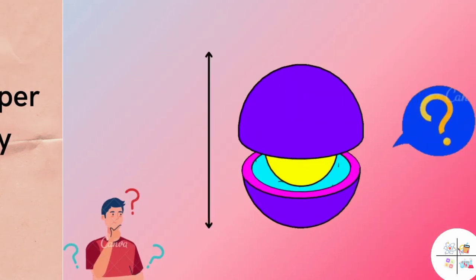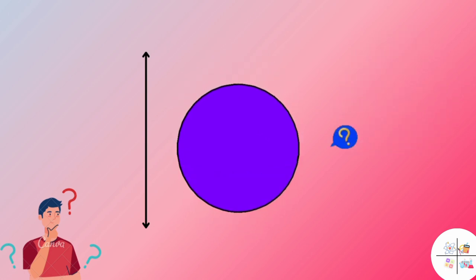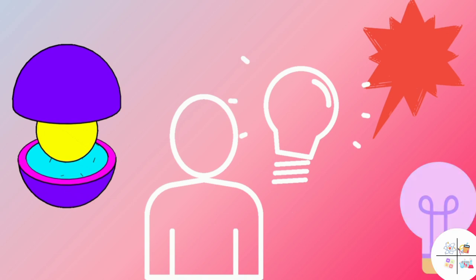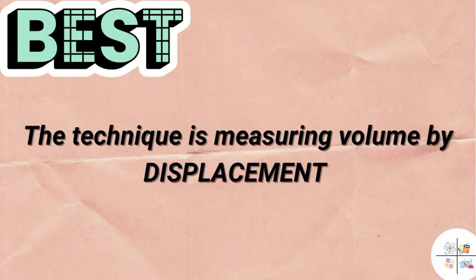Most objects do not have a regular shape, so we cannot find their volumes by simply measuring the length. Here is how to find the volume of an irregularly shaped object. The technique is known as measuring volume by displacement.